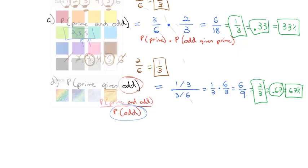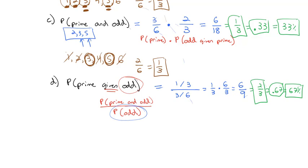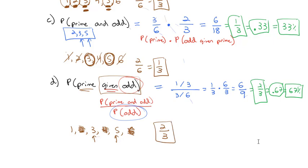This feels a little abstract, so it's probably better to look at the definition here. We have all numbers 1–6, but given that it's odd, we only look at the odd numbers — 2, 4, and 6 do not exist. We've shrunk the sample space down to just 1, 3, and 5. Of those odd numbers, 3 and 5 are prime, so the probability is 2 out of 3.